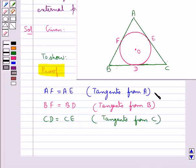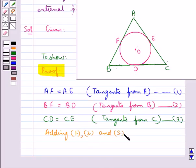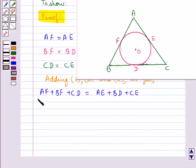We take this as equation 1, this as equation 2, and this as equation 3. Now adding these equations, we get AF plus BF plus CD equals AE plus BD plus CE.